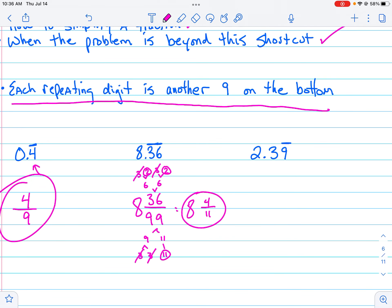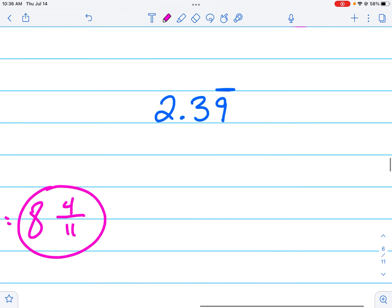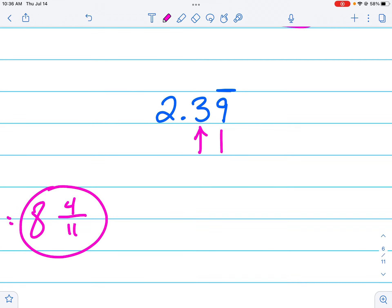And as I mentioned, you have to know when problems are beyond the shortcut. They're beyond the shortcut when you have a non-repeating digit. Notice how this line up here doesn't cover the 3 and then you have one that is covered.